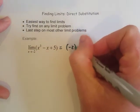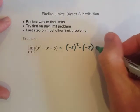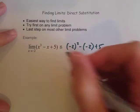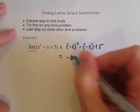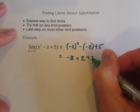So I do negative two cubed minus negative two plus five, and that equals negative eight plus two plus five.